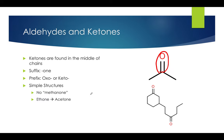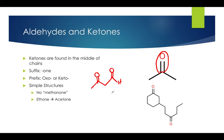Before I move on, let me discuss the priorities of these groups. Aldehydes are prioritized over ketones, so if you see a molecule with both an aldehyde and a ketone, it would be considered to be an aldehyde. I'll cover the priorities of all the molecules I discuss at the end of the lecture — I'll have a chart for it.